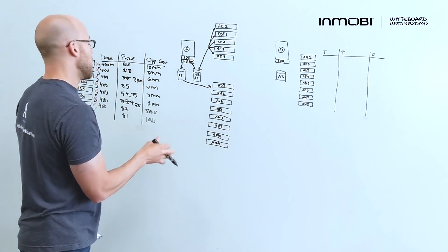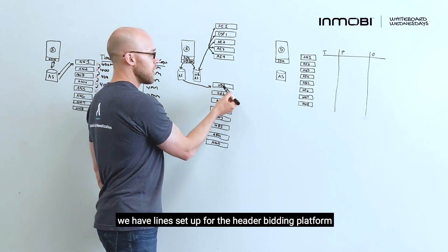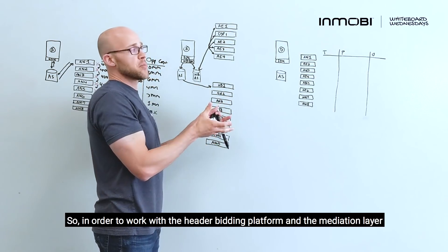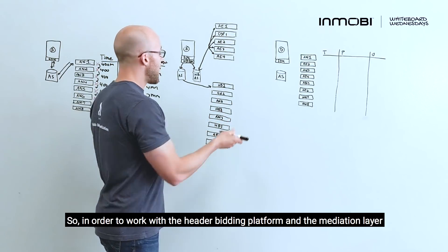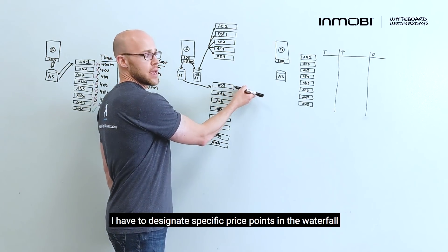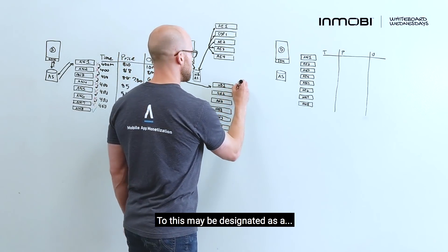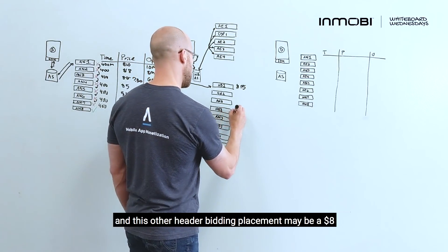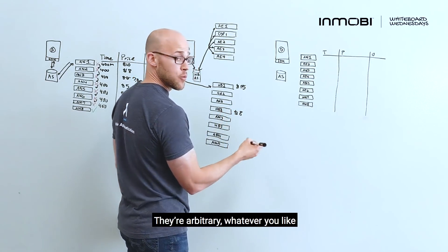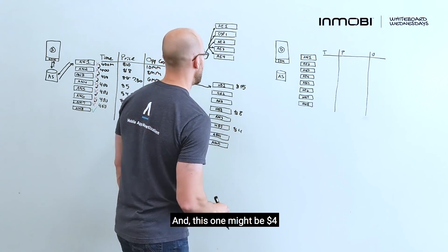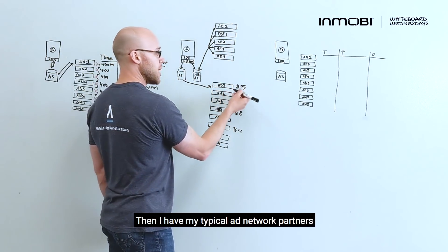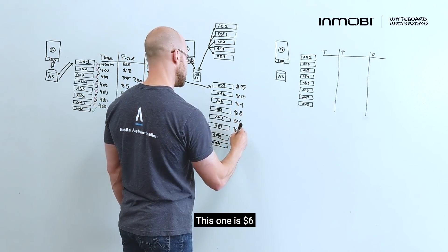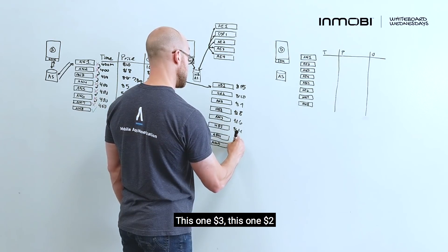Now, you'll notice, we have lines set up for the header bidding platform. So, in order to work with the header bidding platform and the mediation layer, I have to designate specific price points in the waterfall. So, this may be designated as a $15 placement. And this other header bidding placement may be $8. They're arbitrary wherever you like, and this one might be $4. Then I have my typical ad network partners. You know, this one's $10, this one's $9, this one's $6, this one's $3, this one's $2.